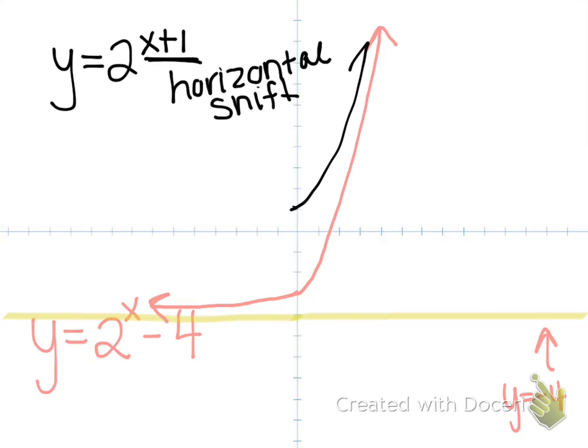Instead of it looking like this, if we shifted, it's going to look like this. But it still has the same asymptote.